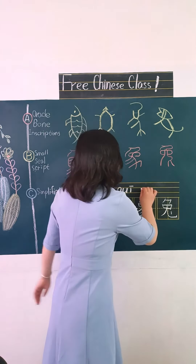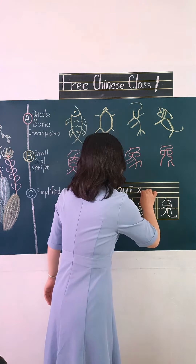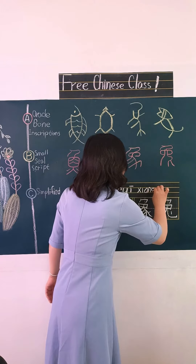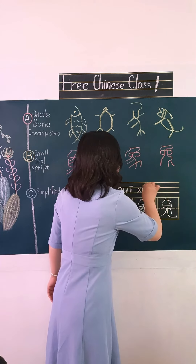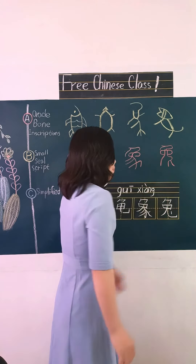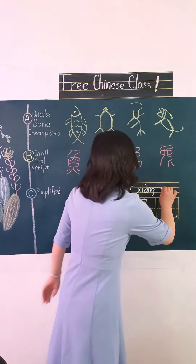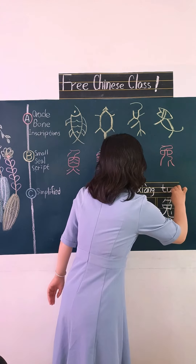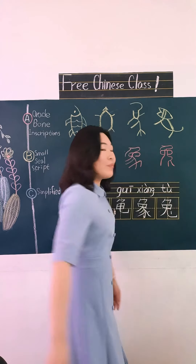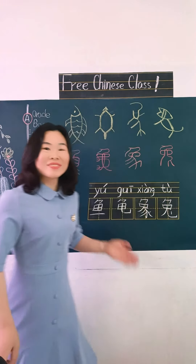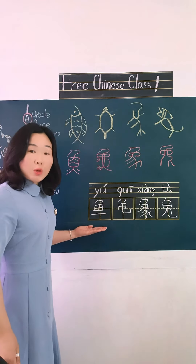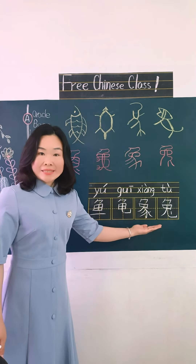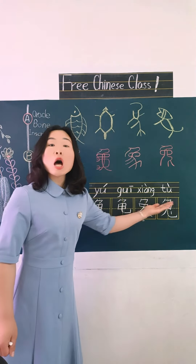Elephant: xi, yi, ang — xiang. Rabbit: te, wu, tu. Yu, gui — xiang, tu.